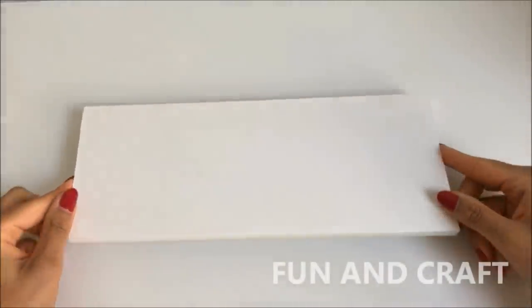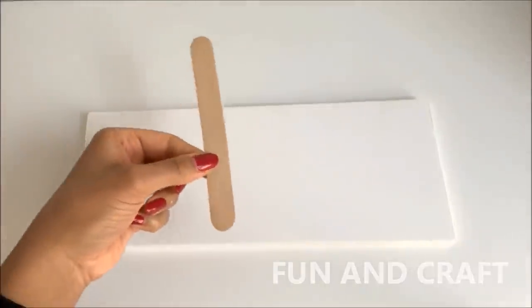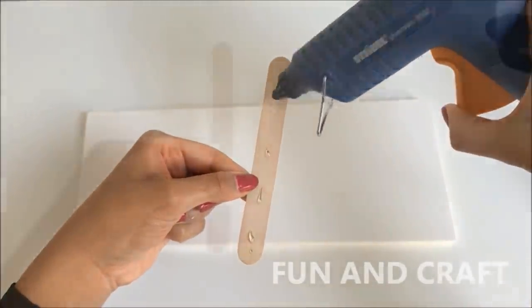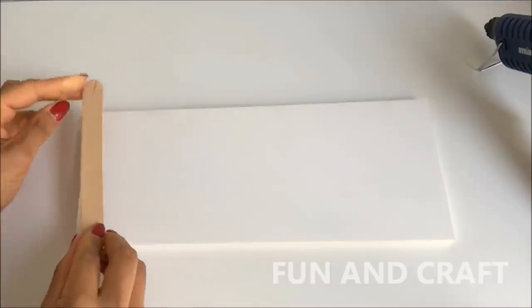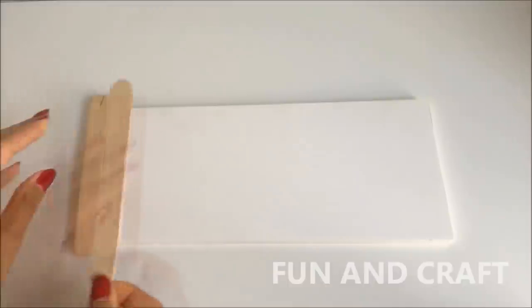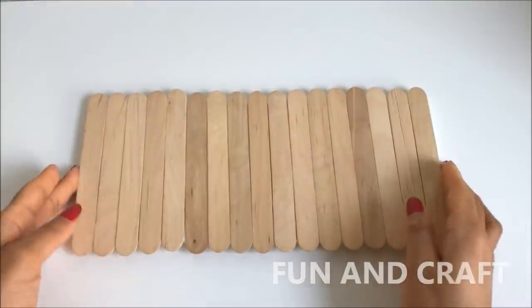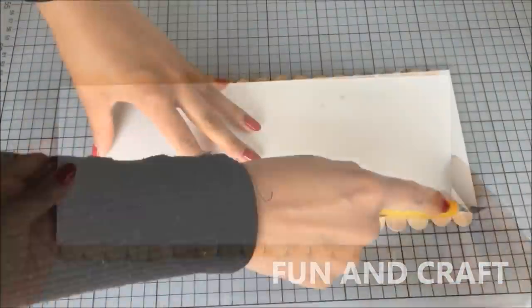Start by cutting out a piece of foam board that is as high as the dollhouse ceiling. In my case it is 30 centimeters long, 10 centimeters wide, and 1 centimeter thick. Now cover it in popsicle sticks.